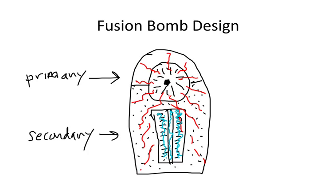A lot of descriptions of fusion bomb designs end right there, but there is actually a third component to the process. When the neutrons from the fusion reactions escape out into the casing of the bomb, they induce fission in the uranium-238 pieces in the tamper. So you start to get fission of the uranium-238 tamper. This is why these fusion designs are often described as fission-fusion-fission: you get fission from the primary, fusion in the secondary, and then more fission as the fusion explosion causes fission reactions in the uranium-238 tamper.